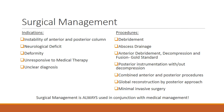Although controversial in the management of TB spine, the indications for surgery include instability of anterior and posterior columns, neurological deficit, deformity, unresponsiveness to medical therapy and an unclear diagnosis. The procedures include debridement, abscess drainage, anterior debridement, decompression and fusion, posterior instrumentation with or without decompression, combined anterior and posterior procedures, global reconstruction by posterior approach and minimally invasive surgery.